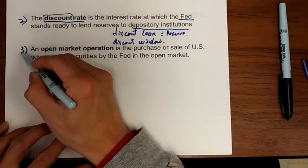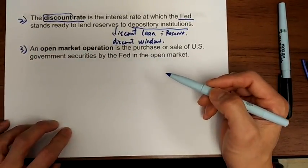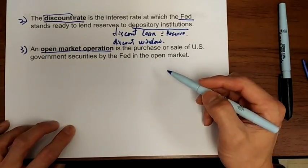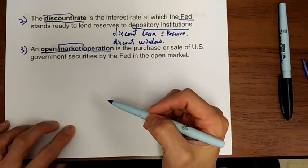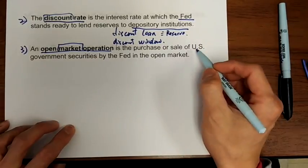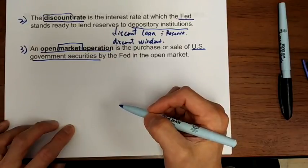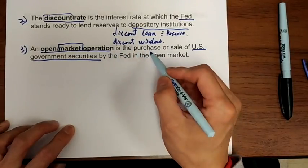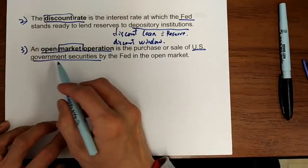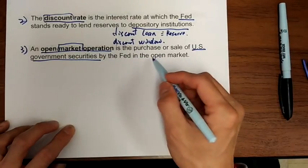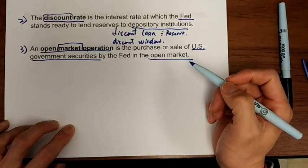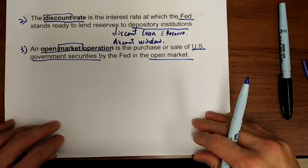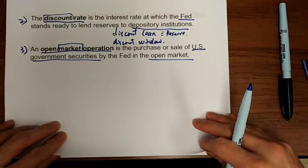The third traditional monetary policy tool is the open market operation. What market? It is the U.S. Treasury security market. So the Fed buys and sells U.S. Treasury securities in the open market — that is called an open market operation. We will talk about more details later.